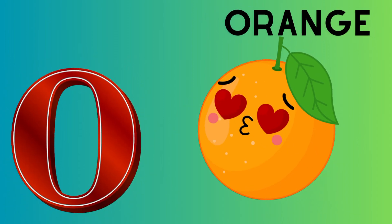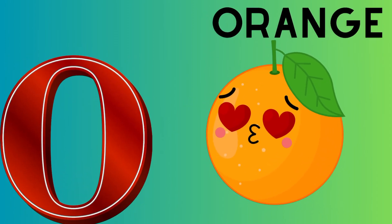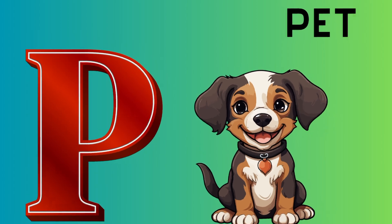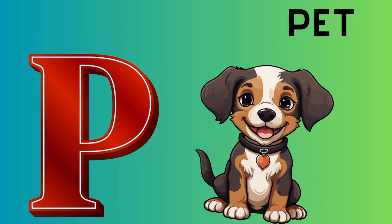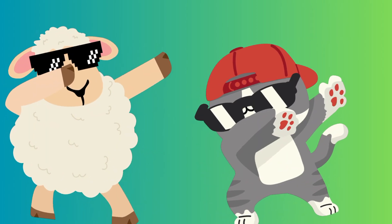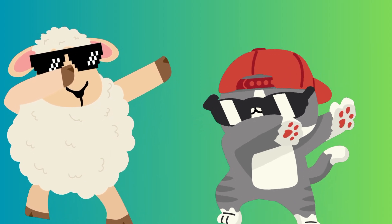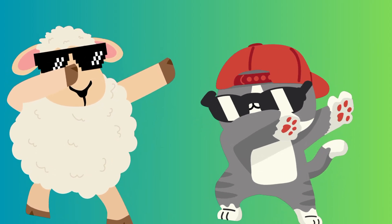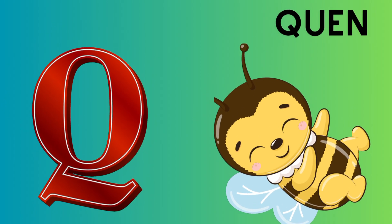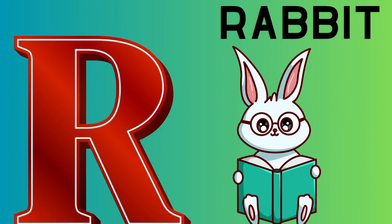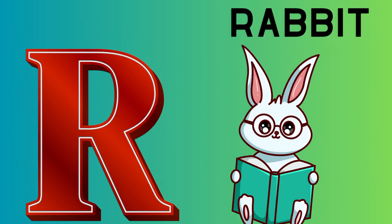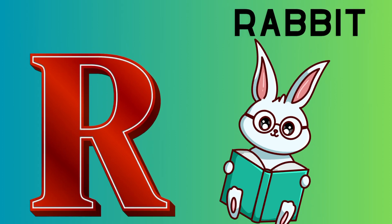O is for orange, o-o-orange. P is for pet, p-p-pet. Q is for queen, qu-qu-queen. R is for rabbit, r-r-rabbit.